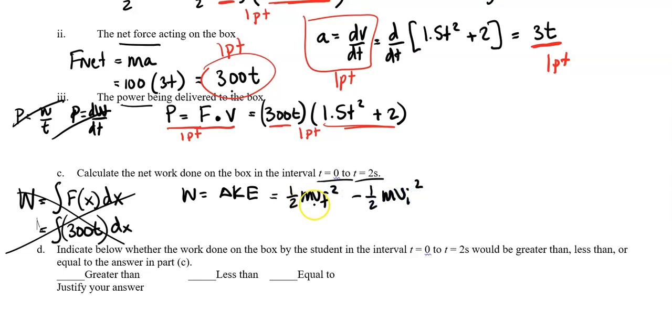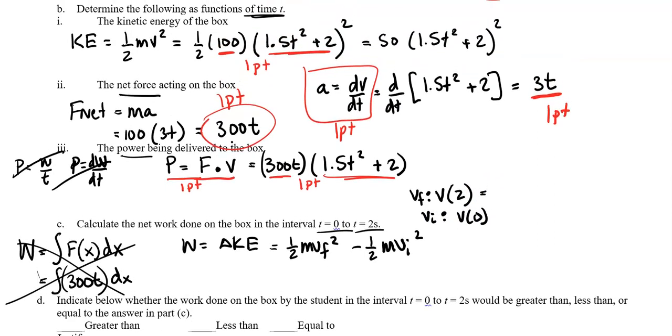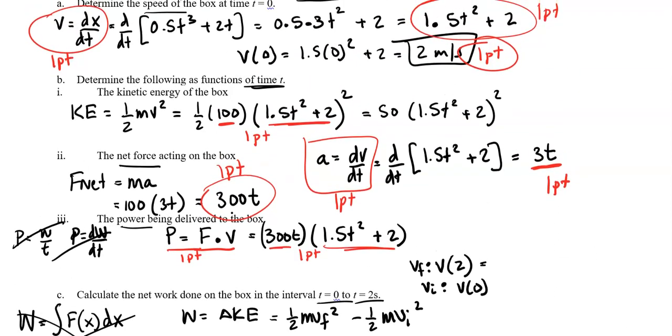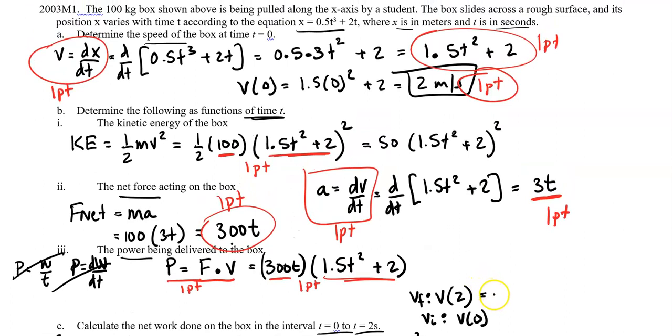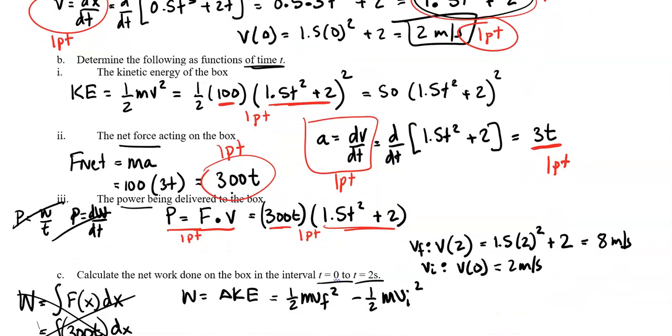So we need essentially the velocity at 2 seconds - that's our final velocity - and we're going to need our velocity at 0 seconds. Velocity at 2 seconds: let's go to our velocity function, which is 1.5t² + 2. Let's plug in 2 to that: 1.5(2)² + 2. I got that to be 8 meters per second. Velocity at 0, we already found that in part A - that is just 2 meters per second.